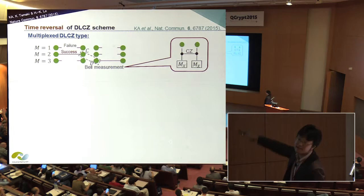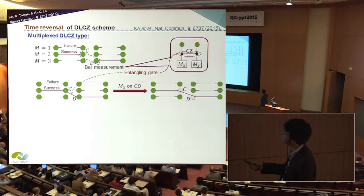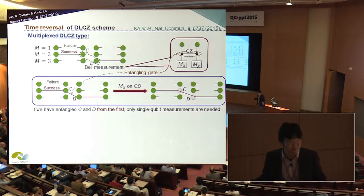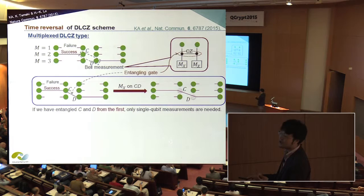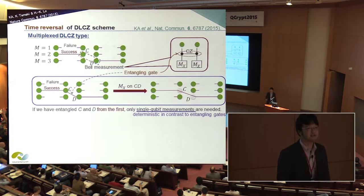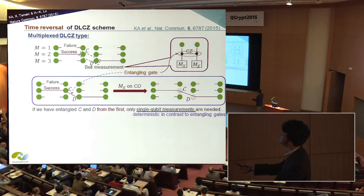Let us go back to the multiplex version of the DLC quantum repeater. The intermediate node performs the Bell measurement depending on the success or failure of the entanglement generation process. Let us call such qubits C and D. The Bell measurement looks like this: an entangling gate followed by X-basis measurement. Now imagine that after applying the entangling gate for qubits C and D, the situation looks like this: qubits C and D are entangled from the first, and after that we just perform the X-basis measurement. In such a case, entanglement is extended to the two end parties. If we have entangled qubits C and D from the first, then only single qubit measurements are needed. Single qubit measurements work deterministically even for almost all systems, including the photonic system.